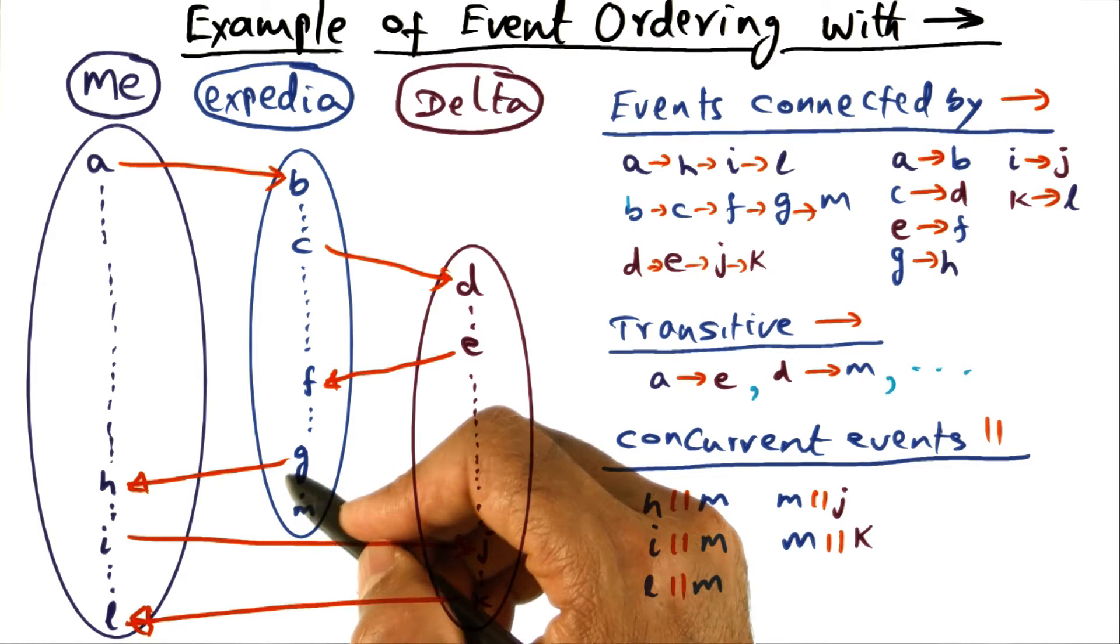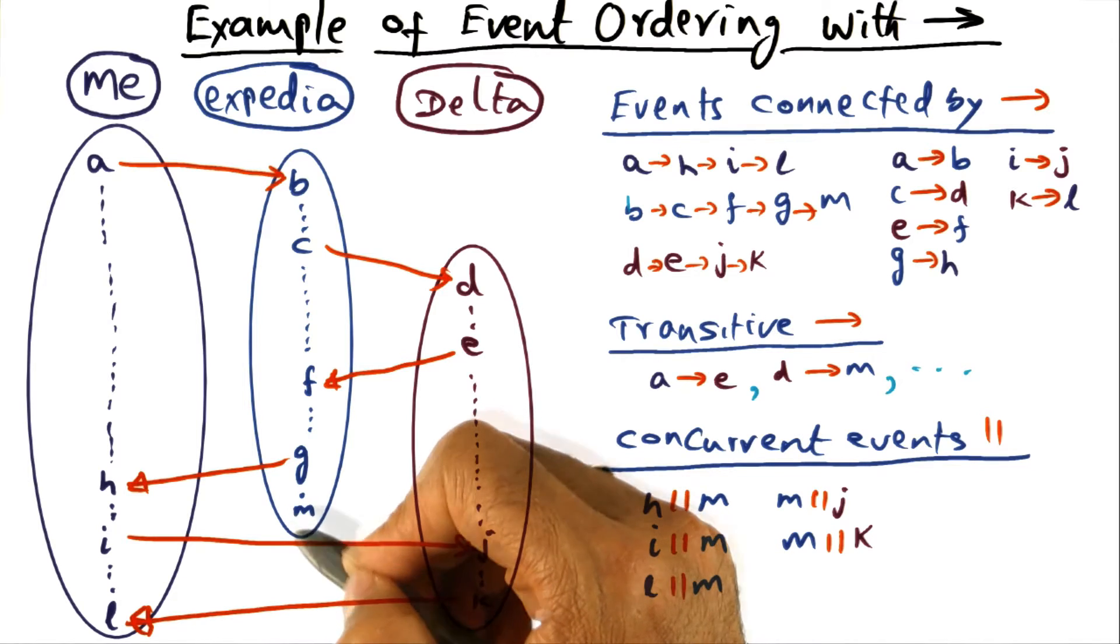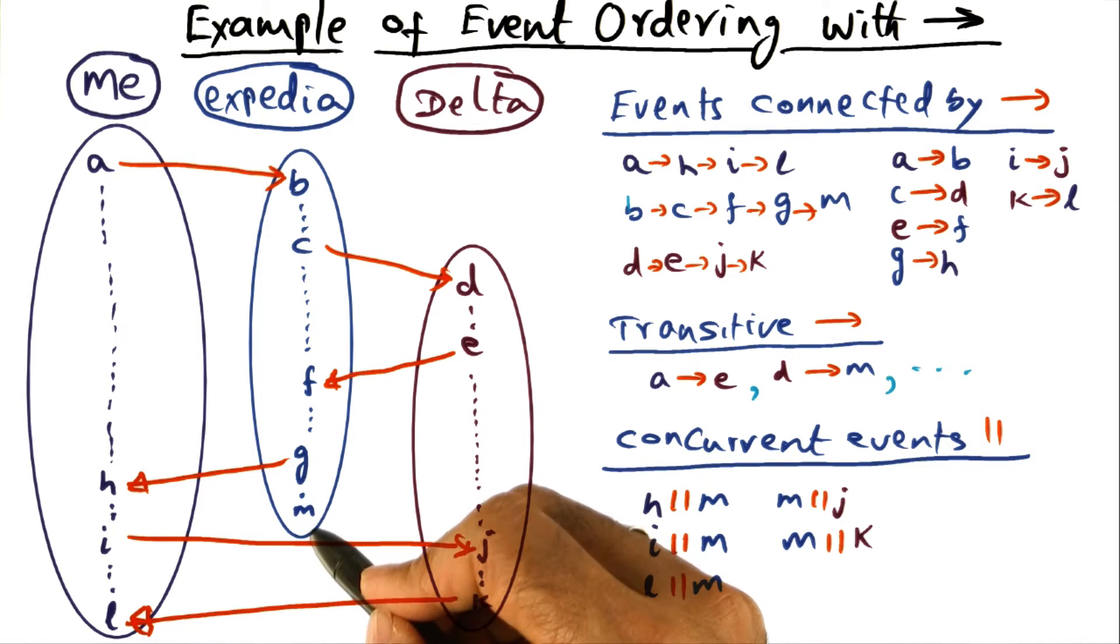maybe my preferences in terms of airlines and so on and so forth. And from that point of view, it is making some internal bookkeeping and that's this event M. And now if you look at this event M,